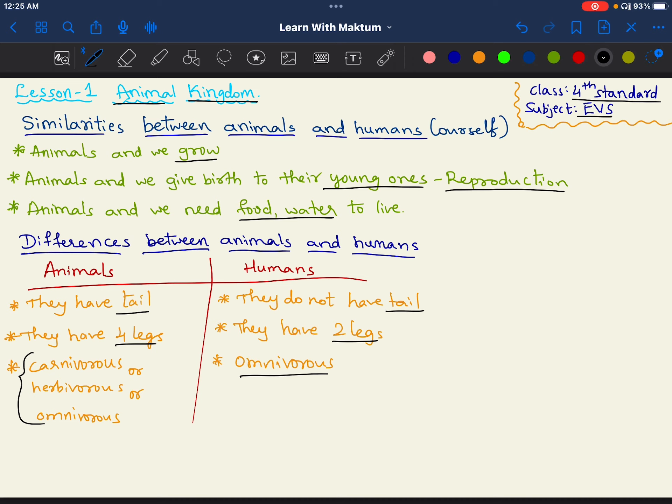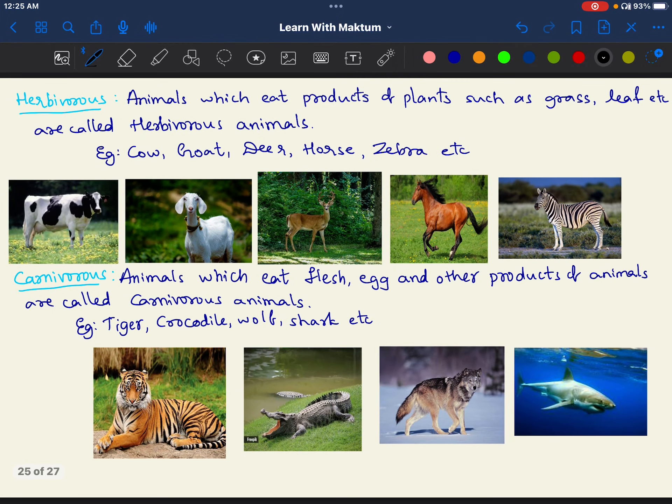Animals are classified based on their food habit. There are animals which eat products of plants, which eat plants or the products of plants. We call them as herbivorous animals or sasyahari pranigalu. Example: cow, goat, deer, horse, zebra, etc. Herbivorous animals which eat plants or the products of plants.